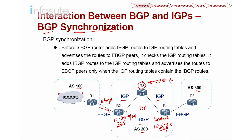With the synchronization rules in place, what R4 will do is check the IGP — in this case OSPF or ISIS — to verify whether it already has the 10 network in its IGP. If the IGP has the 10 network and BGP also has the 10 network, only then will R4 advertise to R5.